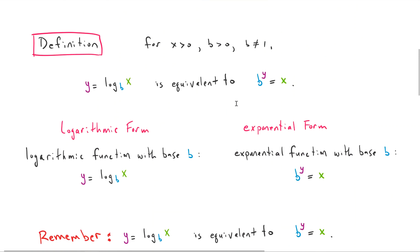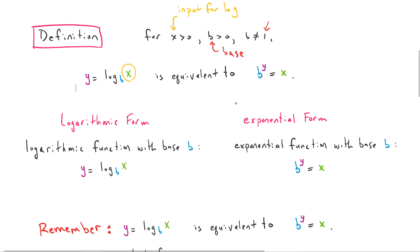Let's start with our definition of logarithms. We just need to remember X, the variable here in our definition, has to be greater than zero — that's the input for our log portion. Our base B has to be positive, but it cannot be equal to one. So really what we're looking at is this definition here: that is a logarithm, log base B.